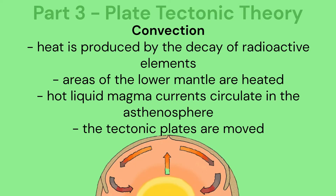Part 3: Plate tectonic theory. Firstly, convection: heat is produced by the decay of radioactive elements, meaning areas of the lower mantle are heated. These hot liquid magma currents circulate in the asthenosphere, meaning that the tectonic plates are moved.